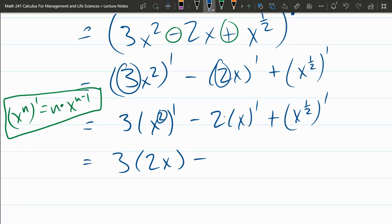Next one, x prime is 1 times x to the 0, which all of this reduces to 1, as we looked at earlier.